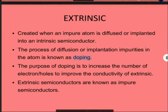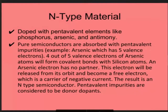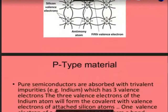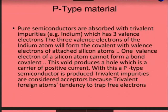The purpose of doping is to increase the number of electrons or holes to improve the conductivity of the extrinsic semiconductor. This extrinsic semiconductor has two types — one is called n-type material and the other is p-type material.